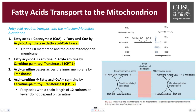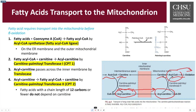Fatty acids with a chain length of about 12 carbons or fewer do not require carnitine for transport. The acyl-CoA must combine with carnitine to become acyl carnitine, allowing passage through translocase. Once inside the mitochondrial matrix, the acyl carnitine is reshuffled back into carnitine and acyl-CoA. The acyl-CoA goes to beta-oxidation, and the carnitine is recycled back out. Carnitine plays a very important role in the movement of fats into beta-oxidation.